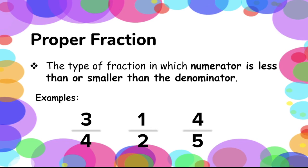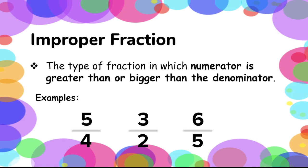Let's go now to the second type, which is improper fraction. These are the complete opposite of the proper fraction, because these are the fractions wherein the numerator is greater or bigger than the denominator. For example: 5 over 4, 3 halves, and 6 over 5.